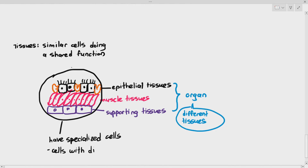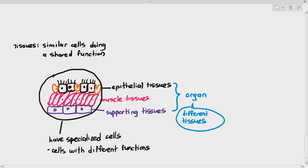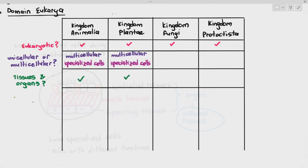Animals and plants have specialized cells that do specific functions. For example, in animals we have goblet cells to produce mucus, ciliated cells with cilia to move mucus upwards, muscle tissues for contraction, and supporting tissues. Because animals and plants have specialized cells, they can form different types of tissues, and those tissues work together to form organs.